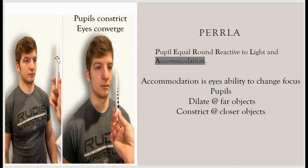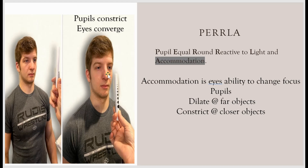Tell the patient to look at a far object, then bring a flashlight or pen and tell the patient to look at it as you bring it closer towards the nose. You will see the pupils constrict and the eyes converge — meaning the eyes move inward towards the nose. That is normal accommodation.